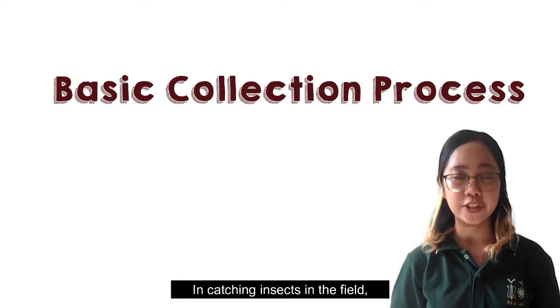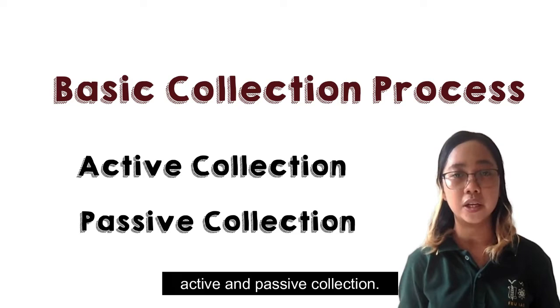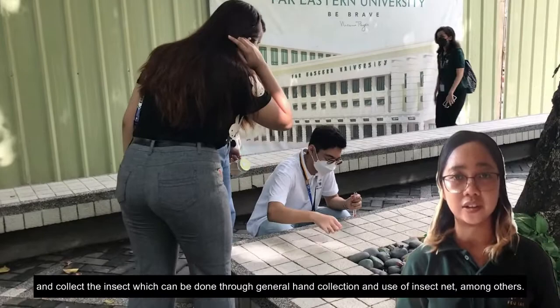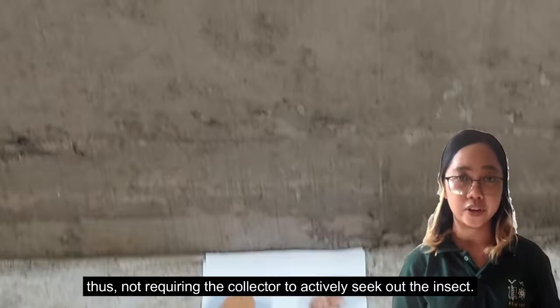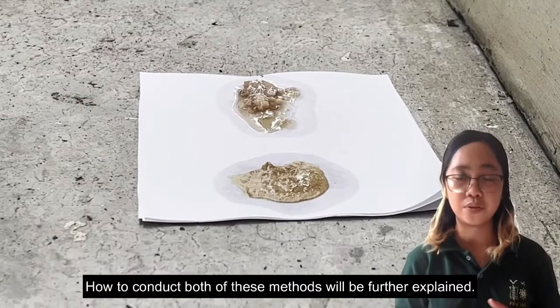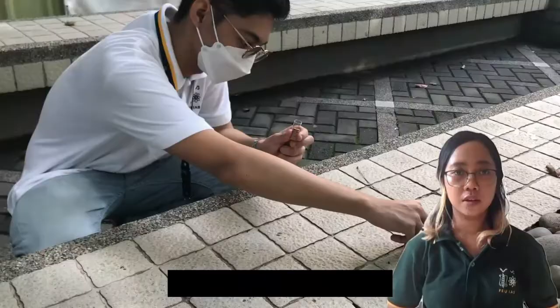In catching insects in the field, two types of collection may be employed: active and passive collection. The former requires the collector to personally seek out and collect the insect, which can be done through general hand collection and use of an insect net, among others. The latter involves setting up traps, thus not requiring the collector to actively seek out the insect. How to conduct both methods will be further explained.